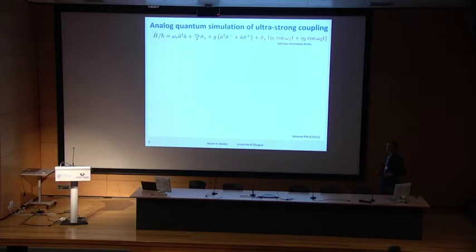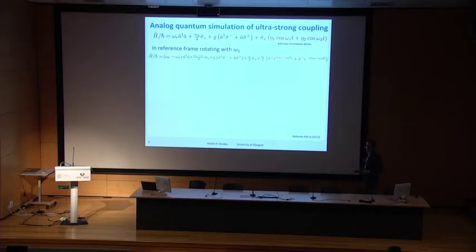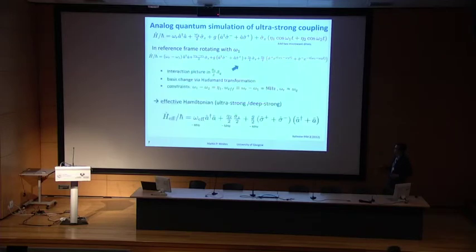If you go into the reference frame of the strong first drive and perform other transformations — switching into the interaction picture and making a basis change — you arrive at a transformed Hamiltonian.